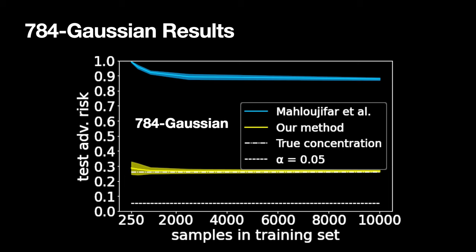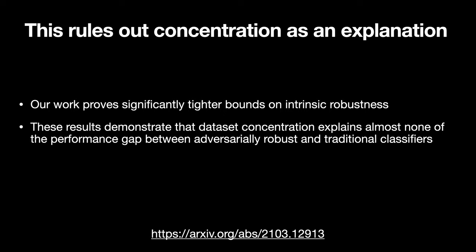By significantly tightening the bounds on intrinsic robustness for multiple benchmark datasets, we have demonstrated that dataset concentration of measure does not explain why we haven't been able to find adversarially robust classifiers. This leaves the door open for potential future developments in adversarially robust learning that allow robust models to achieve near traditional state-of-the-art performance. Thank you.